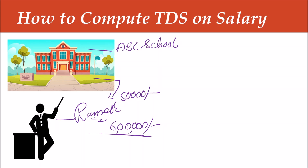For example, Ramesh's tax payable is 48,000 rupees per year. This 48,000 rupees is the income tax payable. Whether Ramesh pays it or not, the school has no way of knowing.